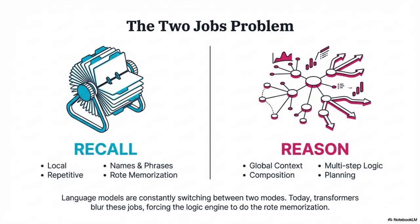Today's models are trying to write a novel while having to reconstruct the dictionary from scratch for every single word. The goal with conditional memory is to give the model a cheap, fast, O(1) way to fetch those stable patterns — the recall part — so that attention and later compute blocks can focus entirely on what actually benefits from depth: the reason component. You're separating the stable memory from the dynamic thinking.